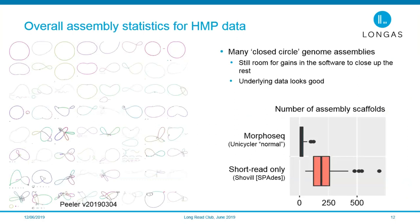We then put together the automated workflow and processed all the genomes from the highly multiplexed batch, getting a whole bunch of additional closed circle assemblies. Not all are coming in as closed circles — when we look at the data, it should support resolving the repeats in the assembly graph, but the software at that point wasn't quite up to the task. There's still a lot of room for gains in the software and we're actively working on that. At a high level, with MorphoSeq most assemblies come in at single-digit scaffold counts, versus roughly 200 scaffolds using short read data alone.